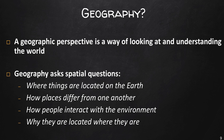Geographers seek to understand where things are found and why they are present in those locations, how things located in the same or distant places influence one another over time, and why places and the people who live in them develop and change in particular ways. A geographic perspective is a way of looking at and understanding the world. Geography asks spatial questions: Where are things located on Earth? How do places differ from one another? How do people interact with the environment? And why are they located where they are? It means analyzing something within its spatial, historical, cultural, political, and physical context.